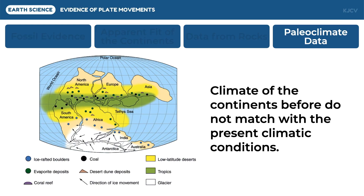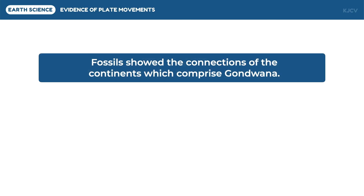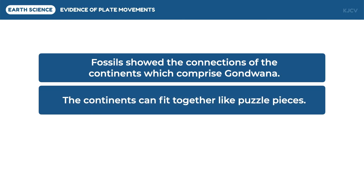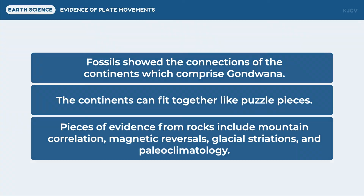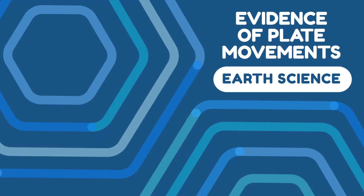To end this lesson, let us review again the following pieces of evidence of plate movements. Fossils show the connections of the continents which comprise Gondwana. The continents can fit together like puzzle pieces. Lastly, pieces of evidence from rocks include mountain correlation, magnetic reversals, glacial striations, and paleoclimatology. And that ends our discussion on evidence of plate movements.